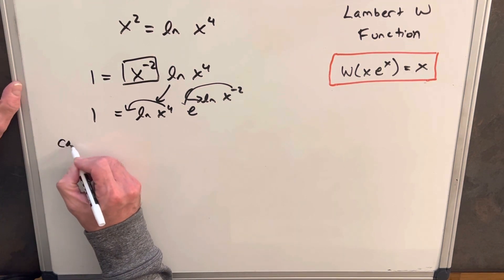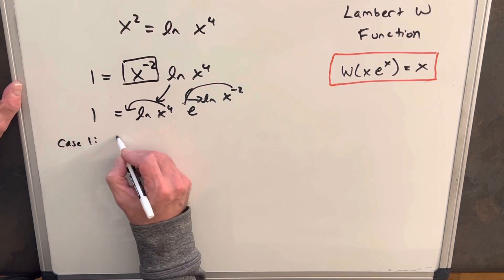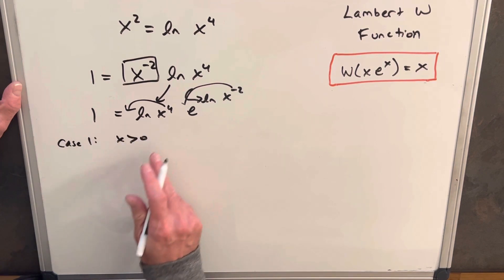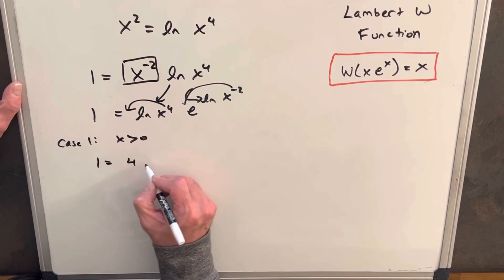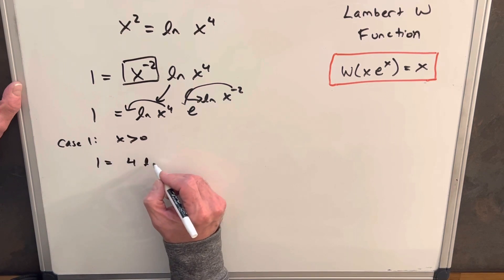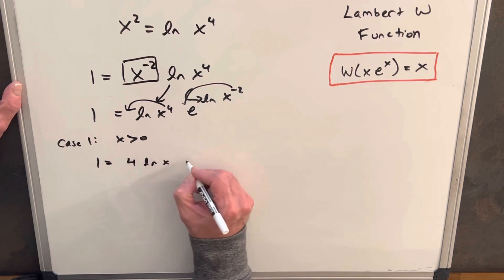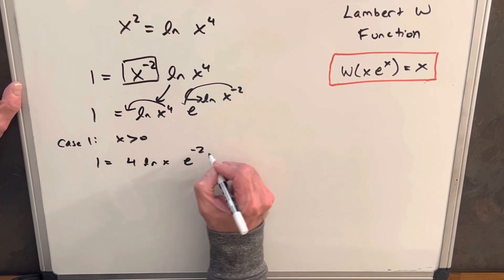So we're going to have case 1, where x is greater than 0. And then, knowing that x is greater than 0, we can actually do this. We can write this as 1 equals 4 ln x, e to the minus 2 ln x.